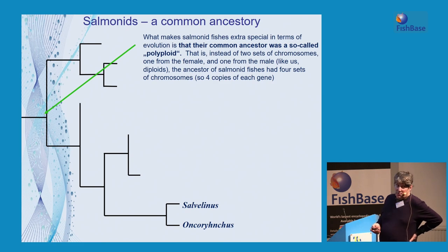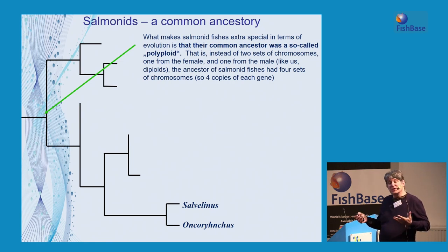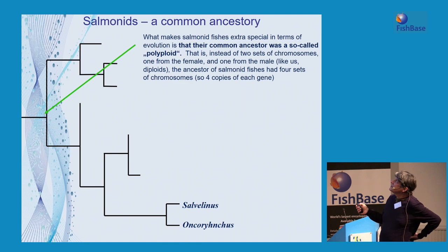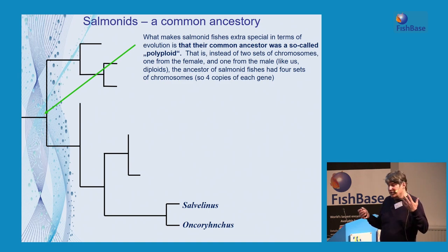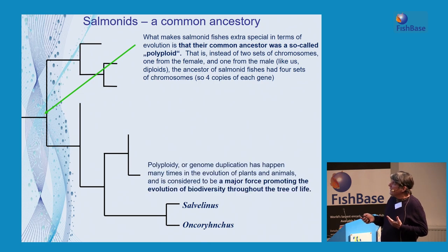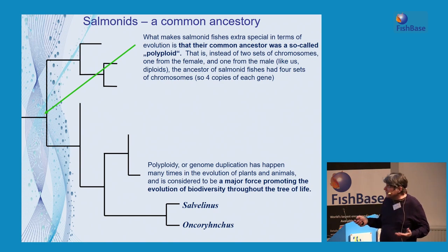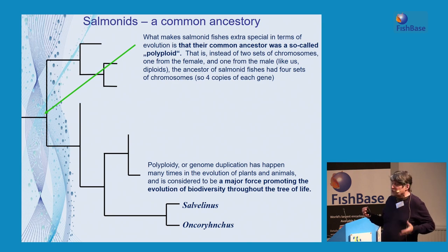Thinking about this common ancestor again, we know that something extra special about salmonid fishes — including grayling — is that this common ancestor was a so-called polyploid. That is, instead of two sets of chromosomes like a diploid organism like us, the original ancestors to salmonid fishes had four sets of chromosomes, meaning four copies of every gene. Polyploidy, or genome duplication, has happened many times in the evolution of plants and animals, and it's considered by many to be a major force promoting the evolution of biodiversity throughout the tree of life.